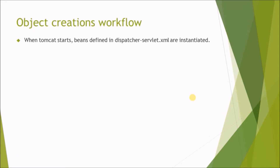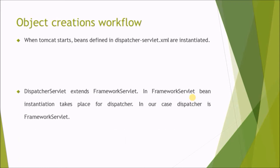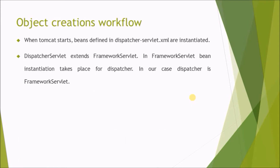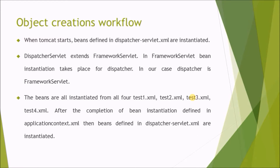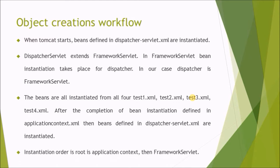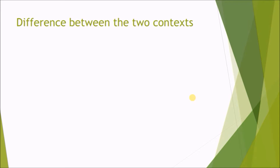Object creation workflow: when Tomcat starts, beans defined in dispatcher-servlet.xml are instantiated. Dispatcher servlet extends framework servlet. In framework servlet, bean instantiation takes place for the dispatcher. The beans are instantiated from all four files — test1.xml, test2.xml, test3.xml, test4.xml — after the completion of bean instantiation defined in the application-context.xml, then beans defined in dispatcher-servlet.xml are instantiated. Instantiation order is: root application context first, then framework servlet.